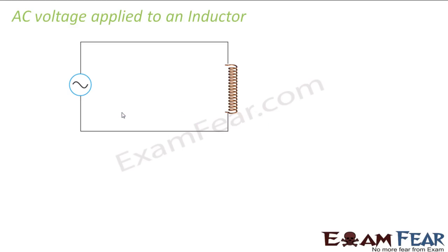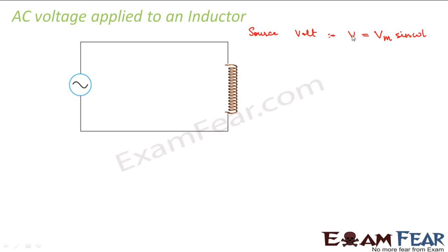Let us start with what happens when an AC voltage is applied to an inductor. The source voltage applied is the normal alternating voltage represented as V = Vm sin(ωt). We will see what current gets generated in this inductive circuit.